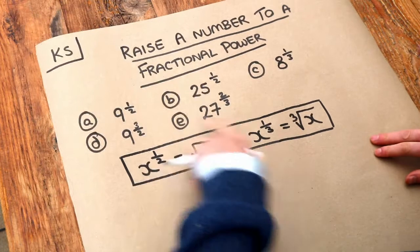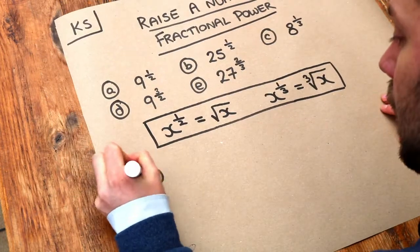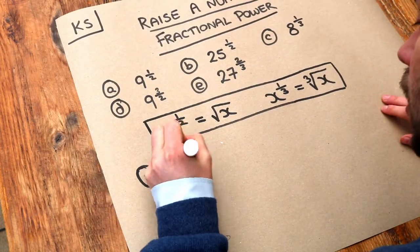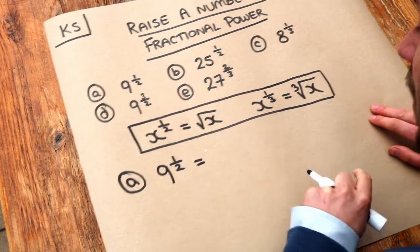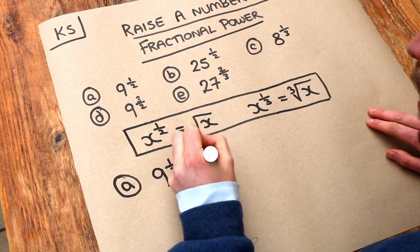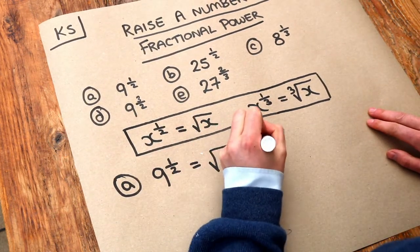So let's apply it to these first three here. If we want to do 9 to the power of a half, the power of half means that we square root it. So we do the square root of 9, and the square root of 9 is just 3.